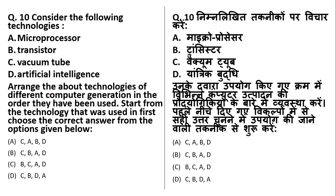Arrange the technologies in order from first introduced to latest: microprocessor, transistor, vacuum tubes, and artificial intelligence. Vacuum tubes were used by first generation computers, transistors by second generation, microprocessors by third generation, and artificial intelligence is used by fifth generation computers making it the latest technology. So the correct order is vacuum tubes, transistor, microprocessor, artificial intelligence — option B is the right answer.